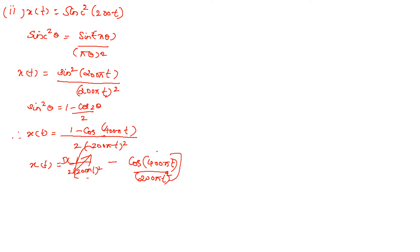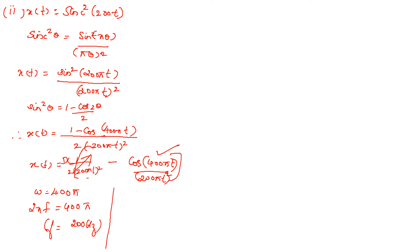Our focus is on the ω term. Here ω = 400π. Since 2πf = 400π, we get f = 200 Hz. Therefore the Nyquist rate is fs = 2 × fm = 2 × 200 = 400 Hz.